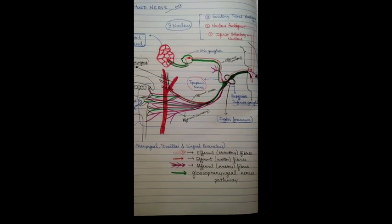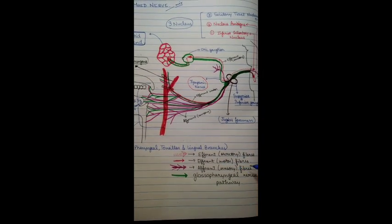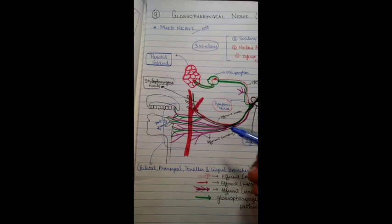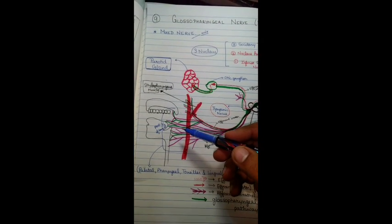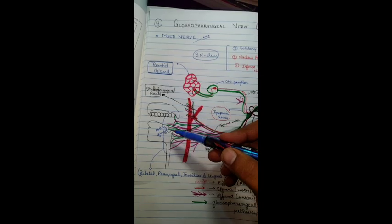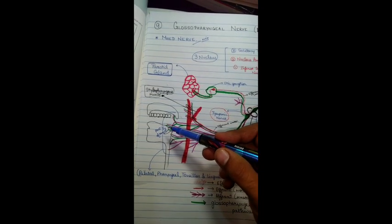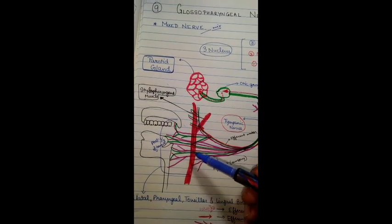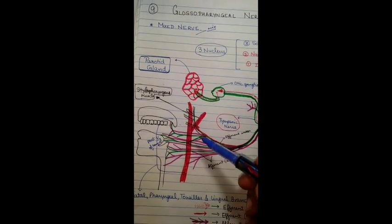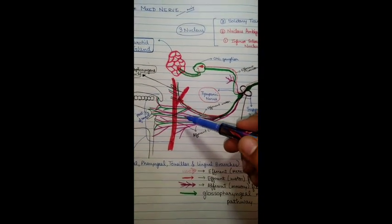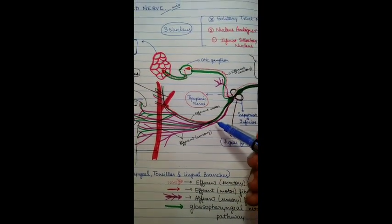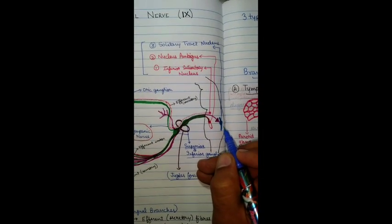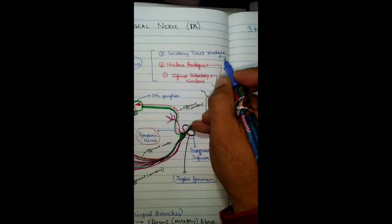Now about the third type of fiber — the sensory fibers. These are the fibers that run from the pharynx, tympanic cavity, and the posterior one-third part of the tongue. As you can see in purple, these sensory fibers will run along the length of the glossopharyngeal nerve and will end at the solitary tract nucleus in the medulla oblongata, which is the third nucleus.